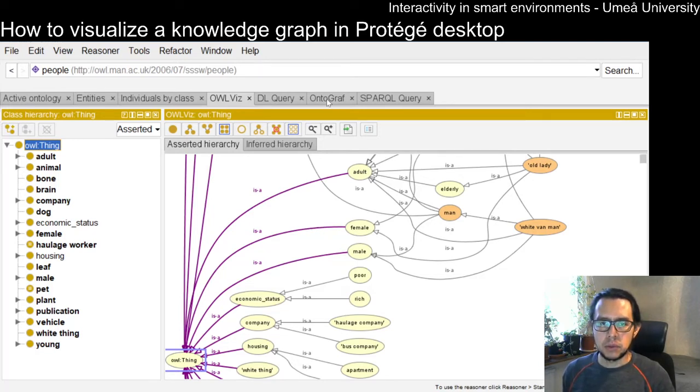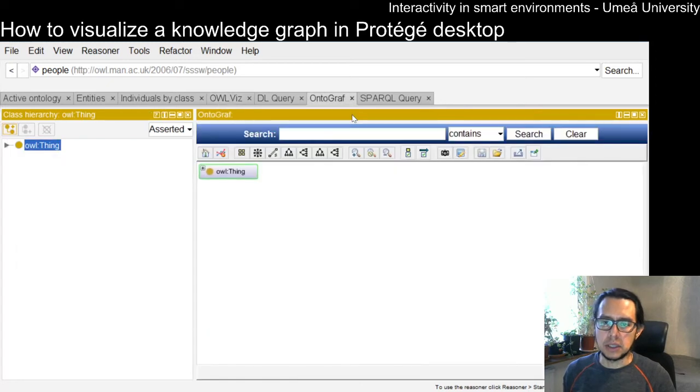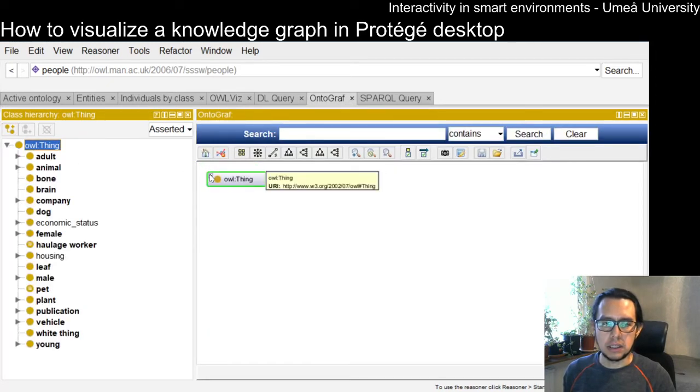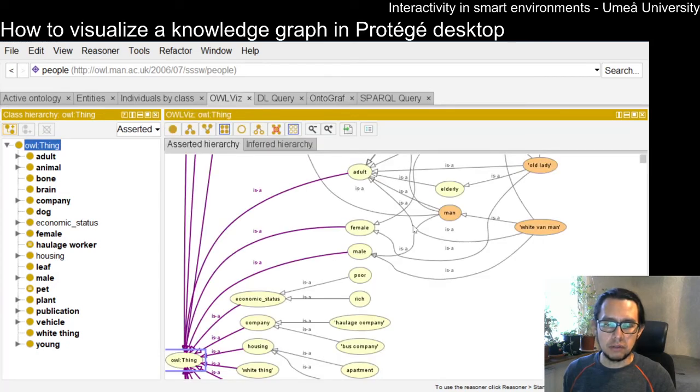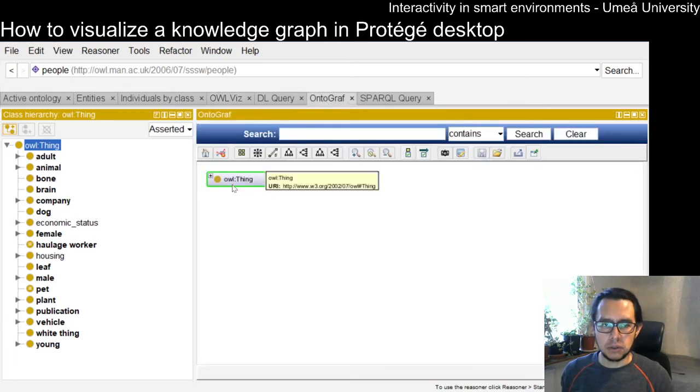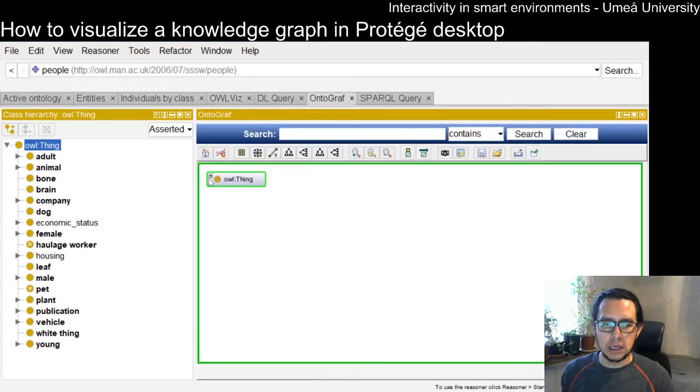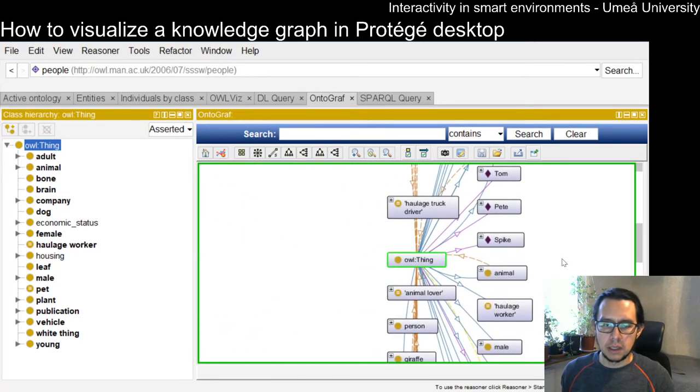the OntoGraf tool is richer. You can see different pieces and also the individuals. With OWLViz, you cannot visualize directly the individuals. But the OntoGraf has the possibility to see relationships and the semantic relationships on them.